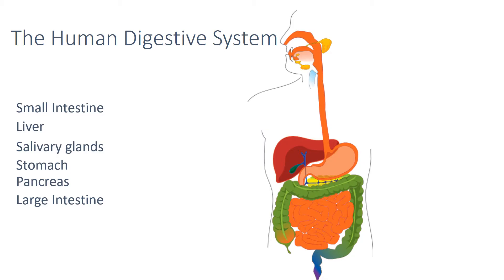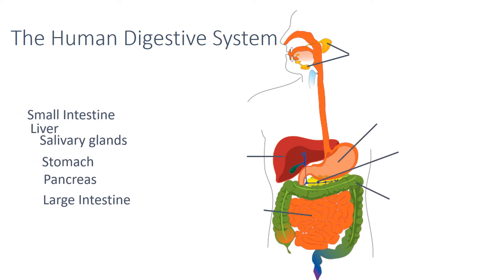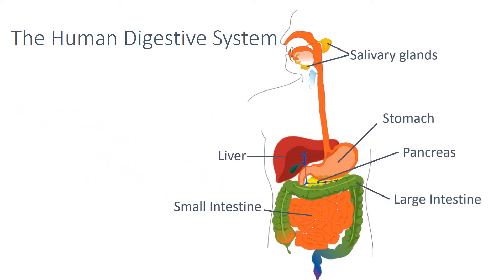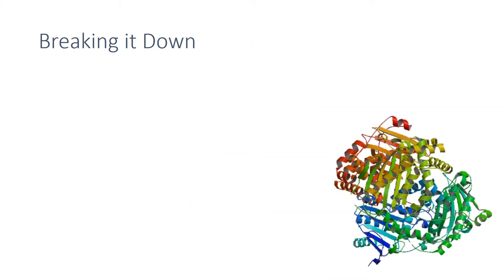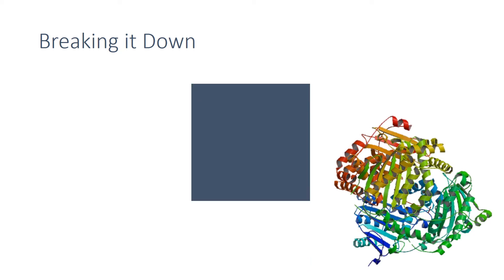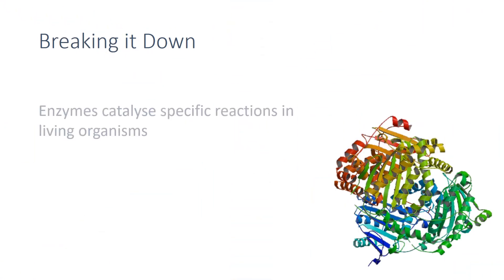The human digestive system is an example of an organ system in which several organs work together to digest and absorb food. Food is broken down in the digestive system with the help of proteins called enzymes. Digestive enzymes convert the food into smaller soluble molecules that can be absorbed into the bloodstream. Enzymes catalyse specific reactions in living organisms, meaning they help speed up the process of digestion.